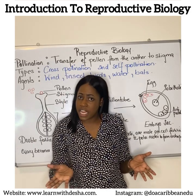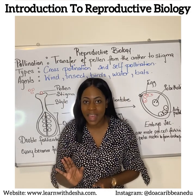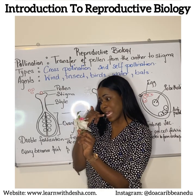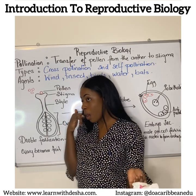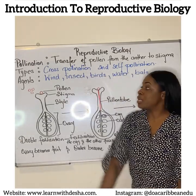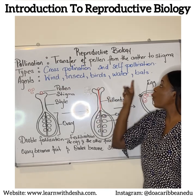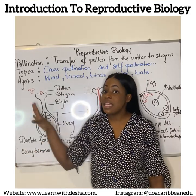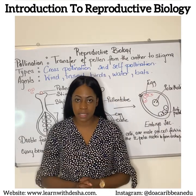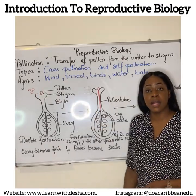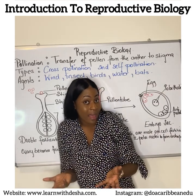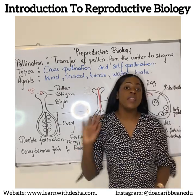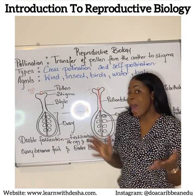How is the process of pollination achieved? We need agents. The agents of pollination include wind, insects, birds, water, and even bats. Flowers and pollen grains are well-adapted to these agents. Pollen grains transported by wind are small, light, and dry. Pollen grains transported by insects are sticky and their flowers are brightly colored. Flowers pollinated by birds are brightly colored and have nectar.